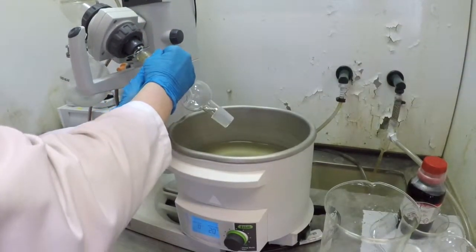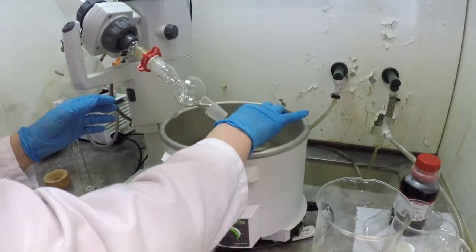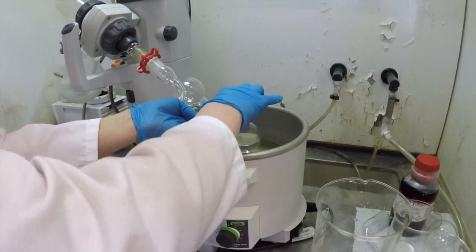The trap is used to minimize product loss, as product that gets bumped into the trap can be rinsed out and back into the round bottom flask.